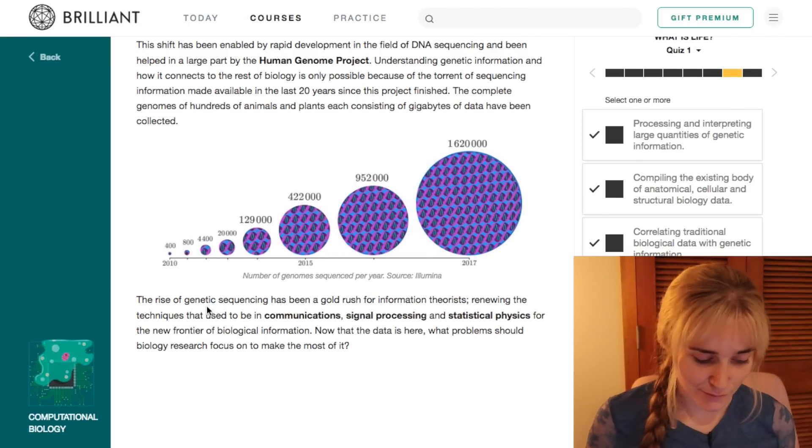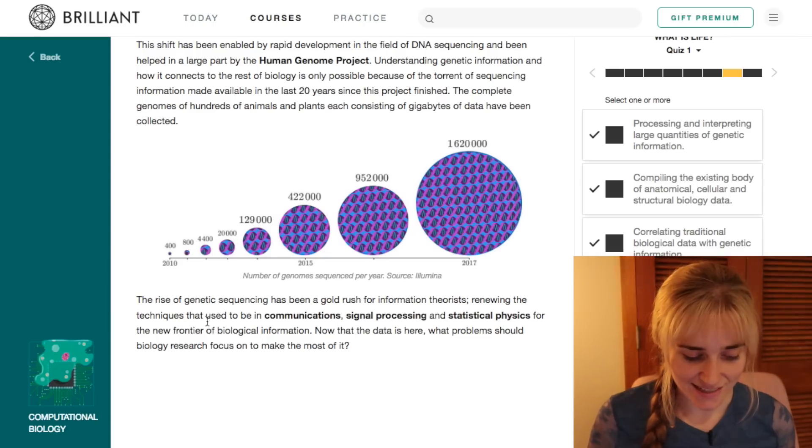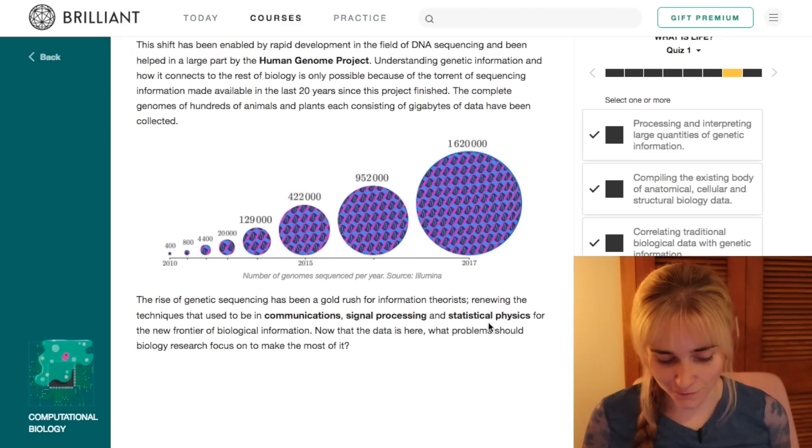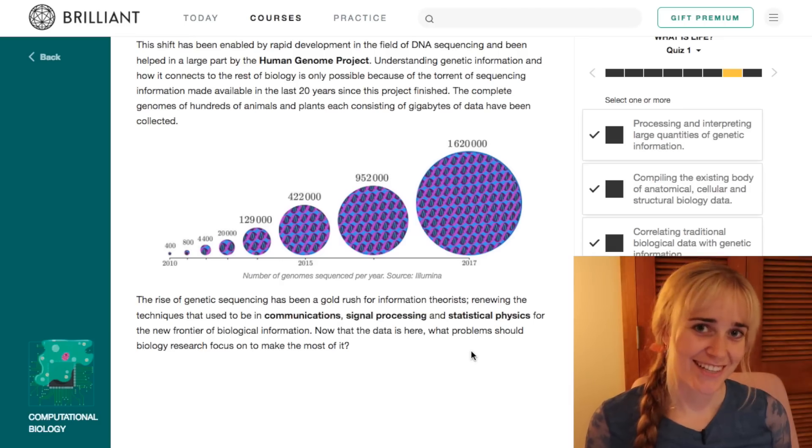It says here that this rise in genetic sequencing has been a gold rush for information theorists, renewing the techniques that were used in communications, signal processing, and statistical physics for this new frontier of biological information. So now that we have all this data, what problems should biology research be focusing on to make the most of it? And I guess we're going to have a look at some of those ideas throughout the rest of this video.